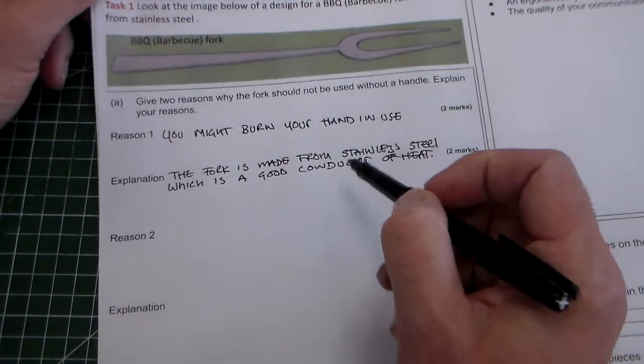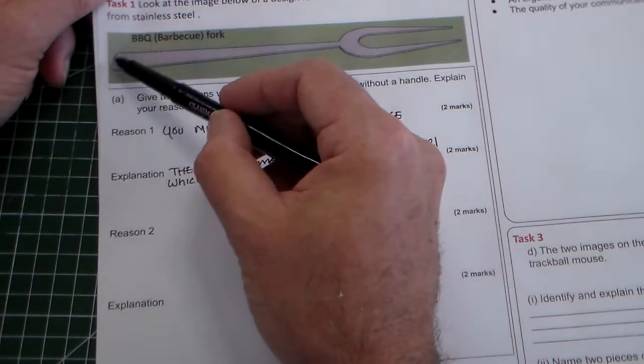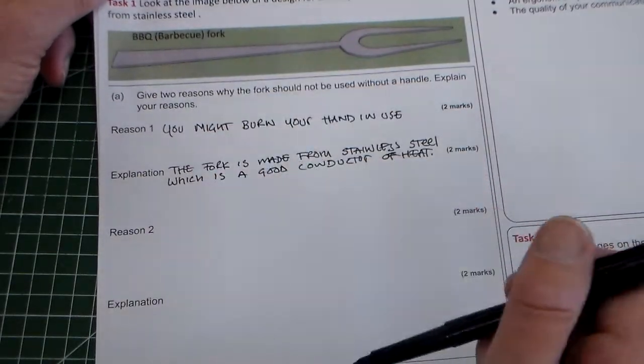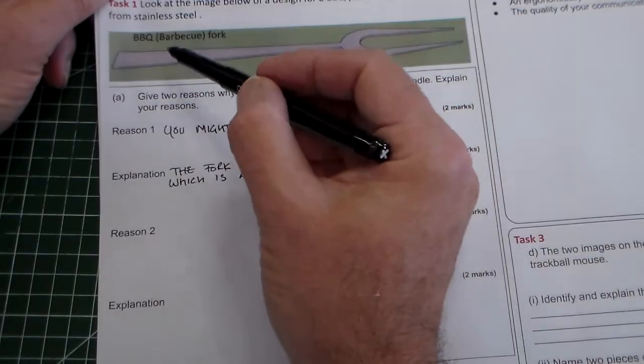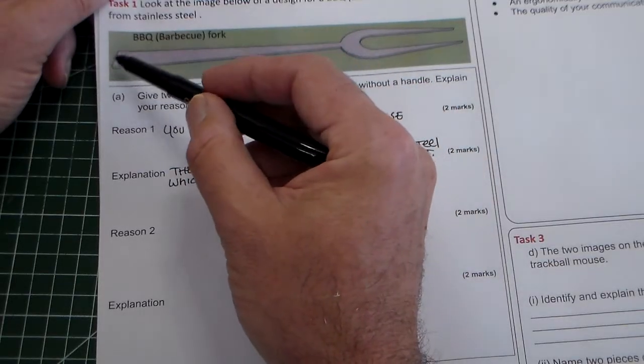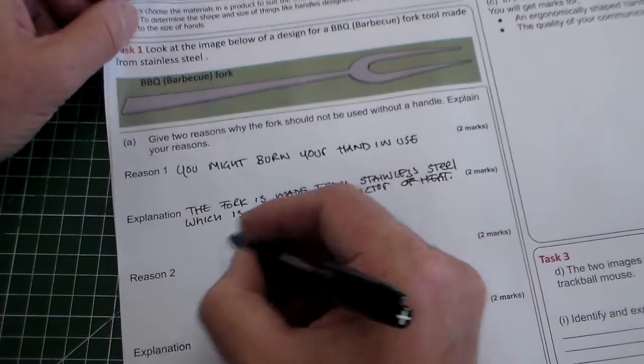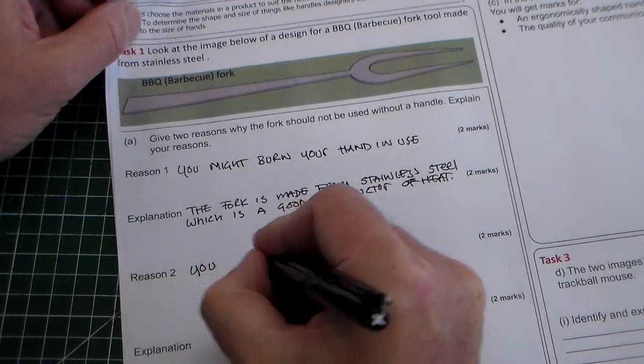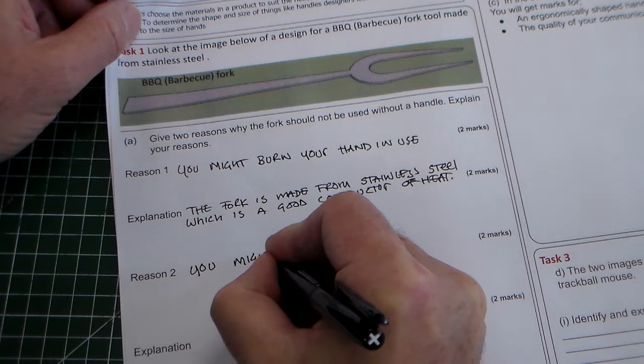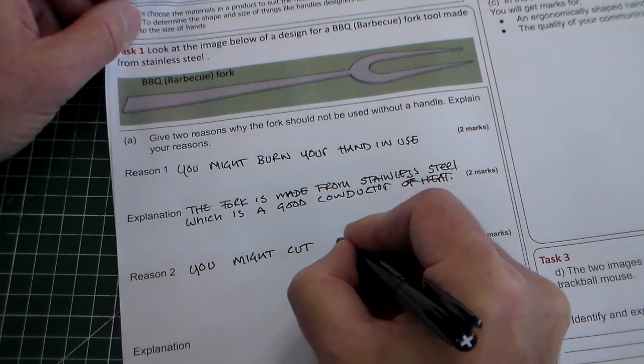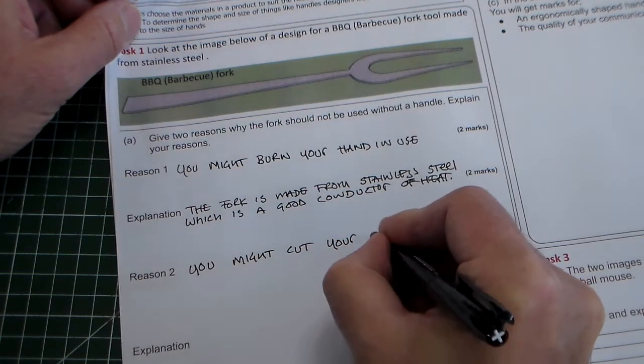So reason two, what could be a problem? Well if we look at the edges here they're quite sharp and we've been told that it's pressed, so that would be really quite a sharp edge there from a pressed piece of stainless steel. So we can say reason two: you might cut your hand.